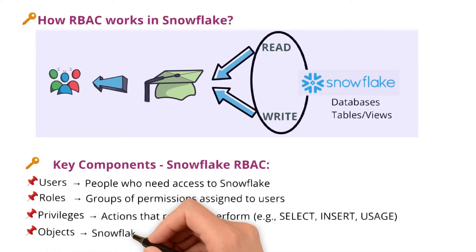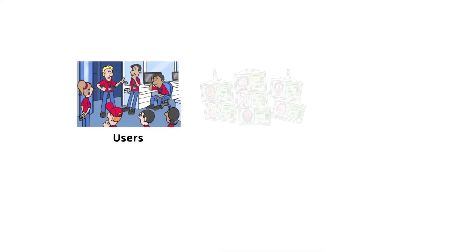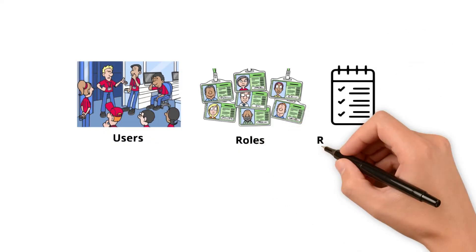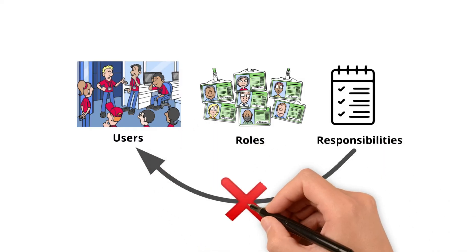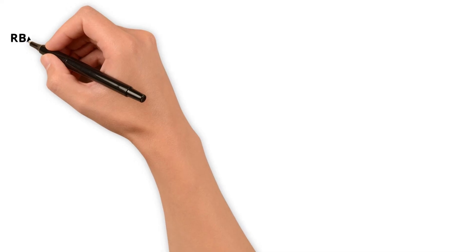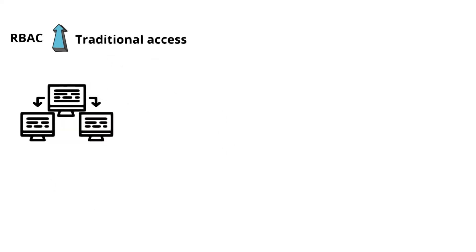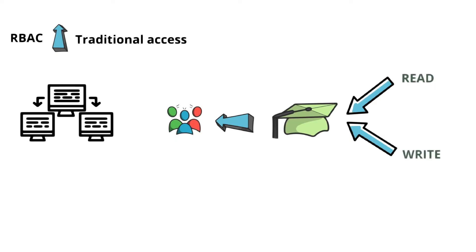And objects, which are nothing but Snowflake resources like databases, schemas, tables, etc. To put it in an analogy, employees are like users who are given job titles, like roles. Job titles come with specific responsibilities, which are nothing but permissions or privileges. You don't assign tasks to employees directly, but based on their role. RBAC is more efficient over traditional access because instead of assigning multiple permissions manually every time, you assign a role that already has the right permissions, and all permissions are inherited automatically.